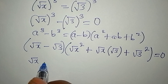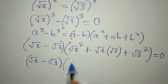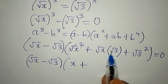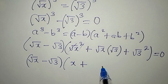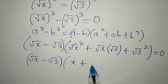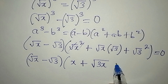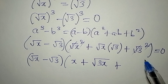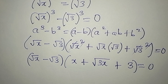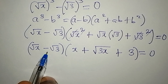Now we have square root of x minus square root of 3. In the second factor, the square roots cancel: we have x, then plus square root of x times square root of 3 which gives square root of 3x, then plus square root of 3 squared which gives 3 — all equal to zero.